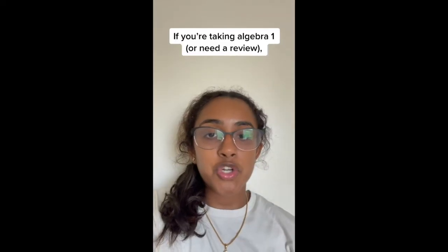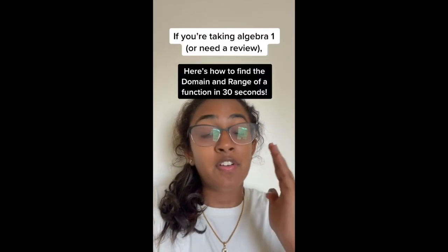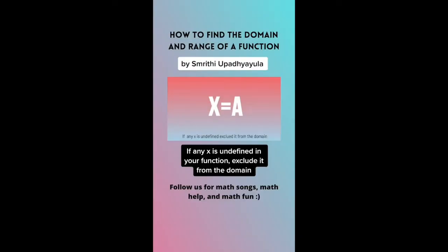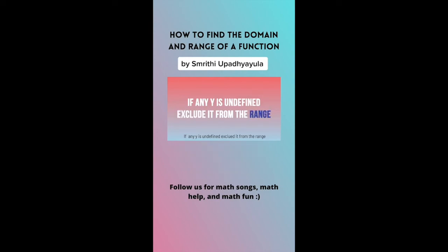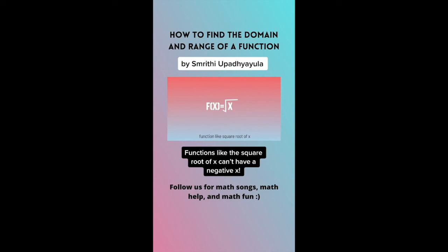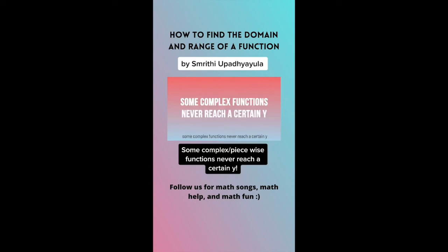Here's how to find the domain and range of a function in just 30 seconds. If any x is undefined, it is excluded from the domain. If any y is undefined, it is excluded from the range. Functions like the square root of x can't have a negative x. Some complex functions never reach a certain y — these are examples of restricted domain and range.